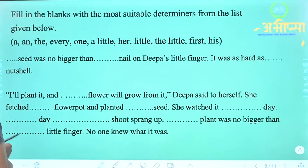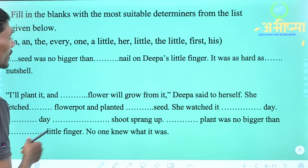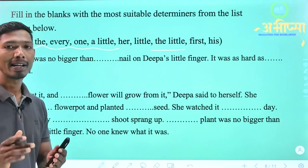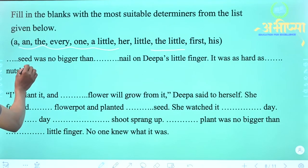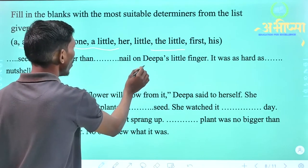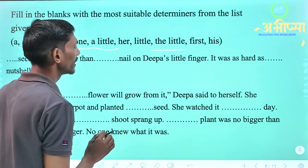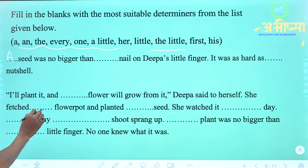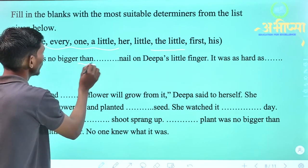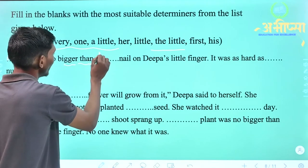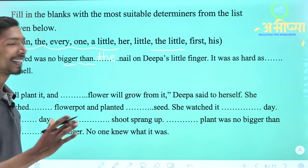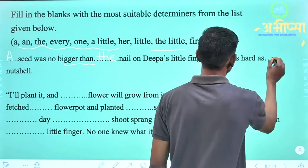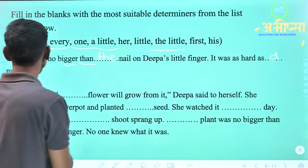Now let's see some questions. Fill in the blanks with the most suitable determiners from the list given below. Yahan pe kuch determiners diye huye hain, aur inka use karke blank ko fill karna hai. 'A seed was no bigger than ___ nail on Deepa's little finger. It was as hard as ___ nut.' Pehle blank mein 'the' aayega — kyunki yahan pe 'bigger than' ka use kiya hai, toh effect daalne ke liye 'the' — nail on the little finger. Doosre blank mein 'a' aayega — 'as hard as a nut.'